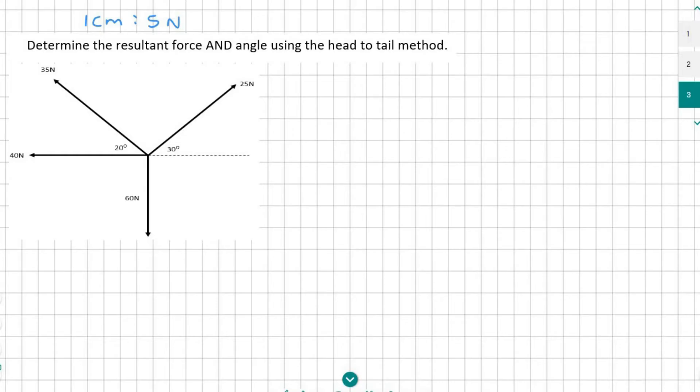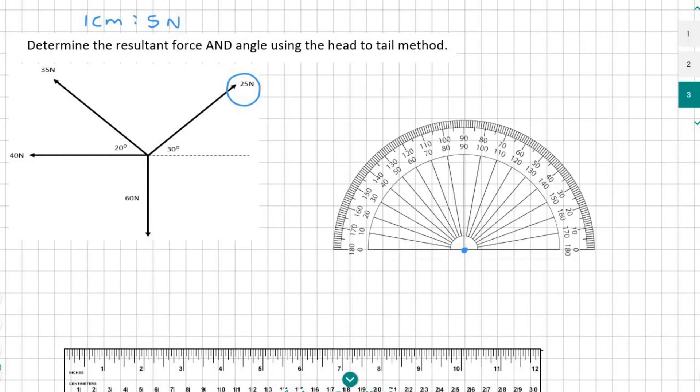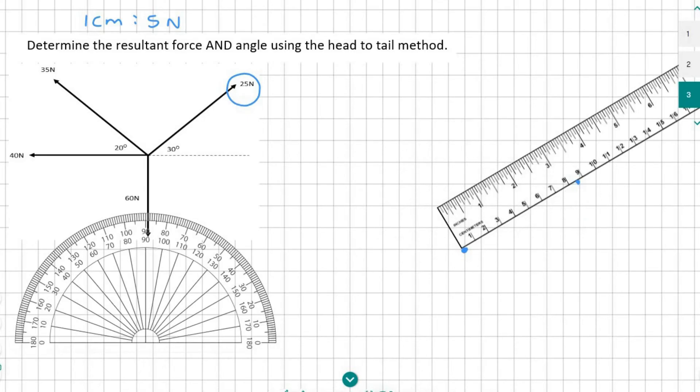So we need to find a starting point which I'm going to make over here, and then you need to choose a force. So I'm going to choose this 25 newton. Now 25 newtons is going to be five centimeters long because one centimeter is the same as five newtons. So I place my protractor at the start and I go up 30 degrees. And then I do a line of five centimeters which would go up to there.